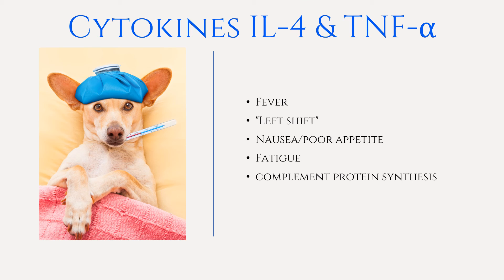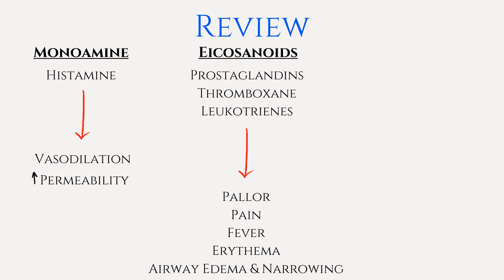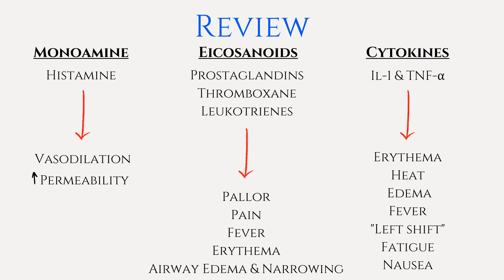In review of cell-derived inflammatory mediators: the monoamine histamine leads to vasodilation and increased permeability, resulting in heat, redness, and edema. The eicosanoid thromboxane causes pallor due to vasoconstriction and platelet aggregation. Prostaglandins sensitize pain receptors, cause fever, and are potent vasodilators leading to erythema. Leukotrienes form SRSA, which results in airway narrowing and edema. The cytokines interleukin-1 and tumor necrosis factor alpha have local clinical manifestations of erythema, heat, and edema, and systemic effects including fever, left shift due to increased immature neutrophils, nausea, and fatigue.